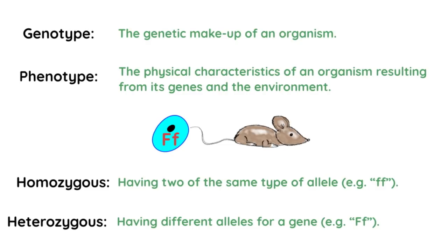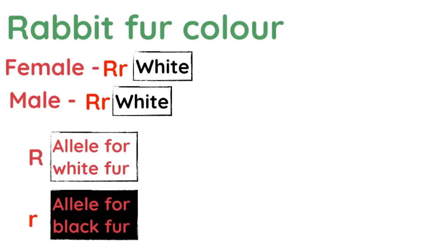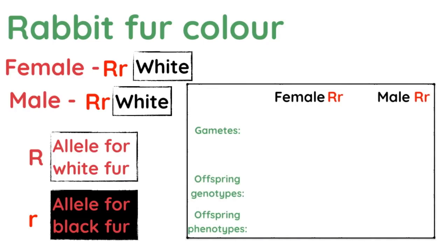Let's look at one more example to cement this idea and show a slightly different way of laying out the diagrams. We're talking about a rabbit and rabbit fur colour. The female parent has genotype capital R, lowercase r — white fur — and the male has exactly the same genotype, capital R, lowercase r, also white fur. Capital R is the allele for white fur, lowercase r is the allele for black fur, and since R is capitalised, white is dominant. Both alleles are present, yet only the white fur phenotype is expressed.